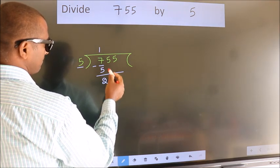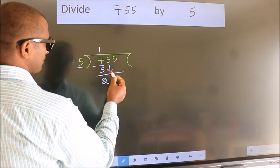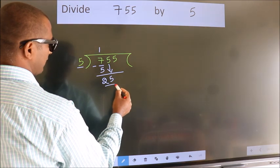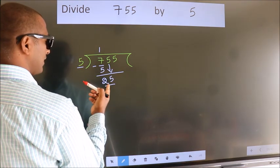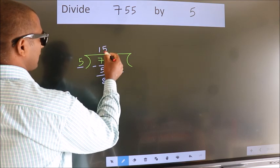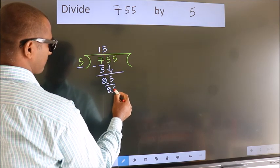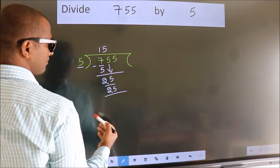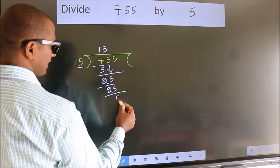After this, bring down the beside number. So 5 down, so 25. When do we get 25? In 5 table, 5 fives 25. Now we subtract, we get 0.